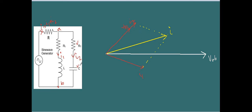VC will be 90 degrees lagging behind I2. This line is VC. The vector sum of VRC and VC is equal to VAB. This sum is equal to VAB, and VRC plus VC — the vector sum line — gives us our voltage VAB.